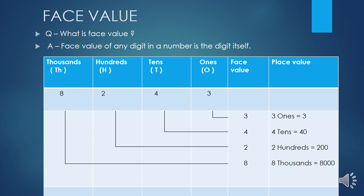Students, jab bhi koi digit apna place change karegi — it means ones, tens, hundred, thousand — kisi bhi place pe ho, according to place uski number se wo multiply hogi. Aur face value according to place change nahi hogi. Face value jo digit hoti hai wahi hoti hai. Thank you.